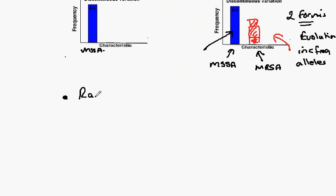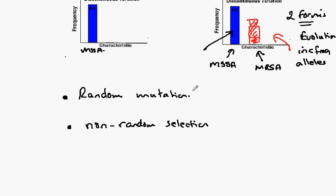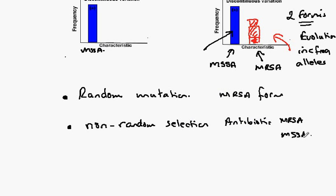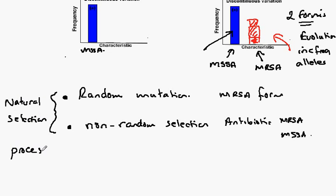There are two features to notice here. The first is the random mutation, which produced the MRSA form. The second is the non-random selection due to the antibiotic, which selects for MRSA to survive and causes MSSA to be killed. These two components are the classic features of the process of natural selection. It should be noted that natural selection is a process, not a thing.